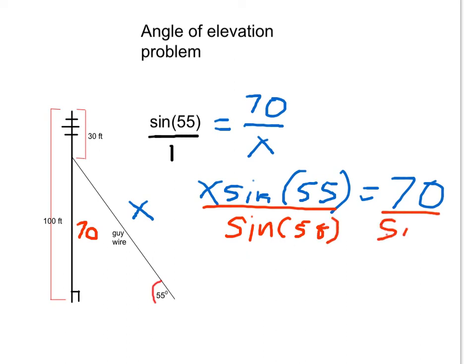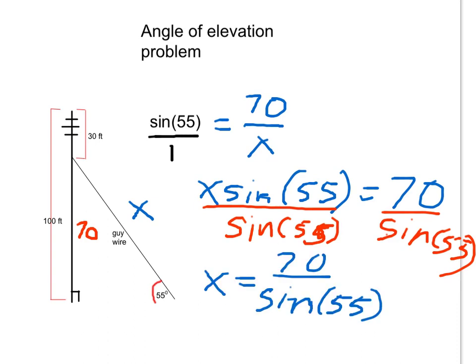Sorry, my 5 got a little goofy there. Running out of room. Simplifying, I get that x equals 70 divided by the sine of 55.